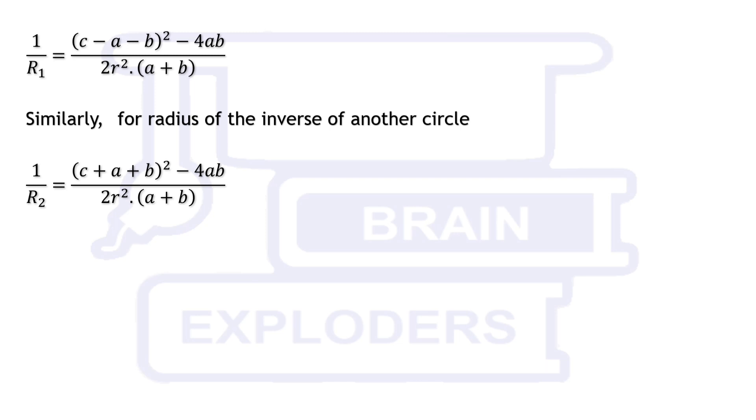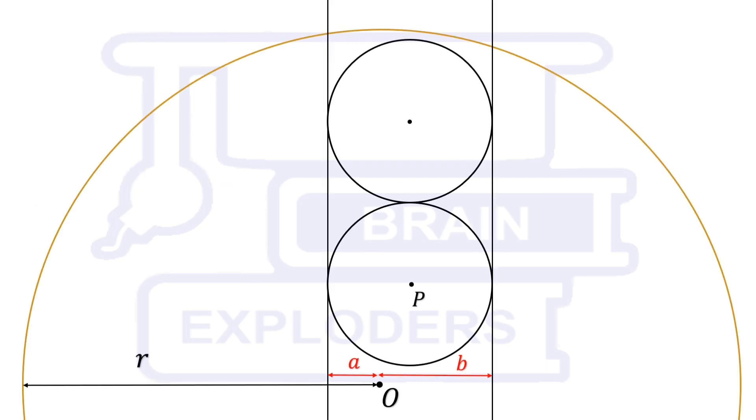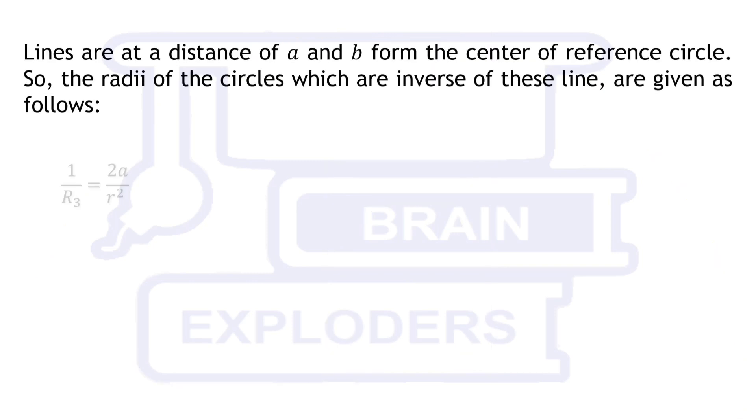Now, we have to find the radii of inverses of these lines. This one is much simple because distances between lines and center of circle is already available. We get 1 over r3 equals to 2a over r squared and 1 over r4 equals to 2b over r squared.